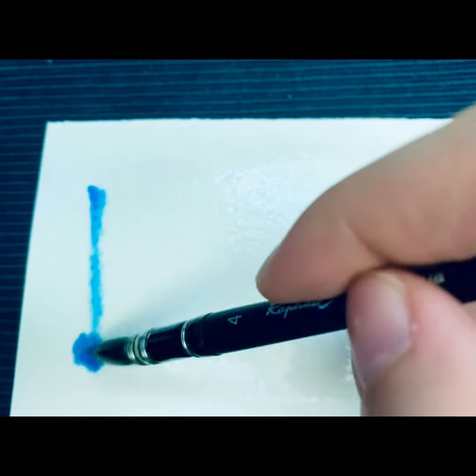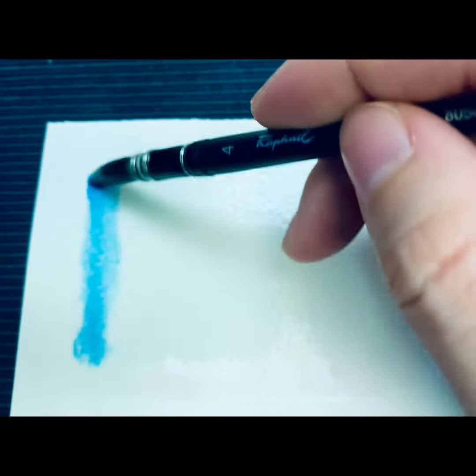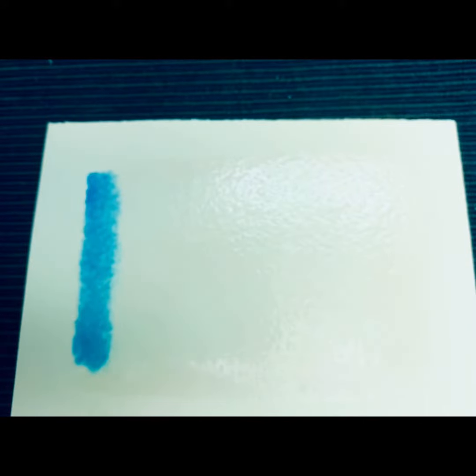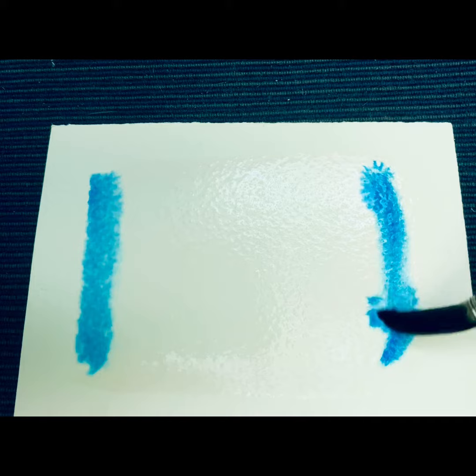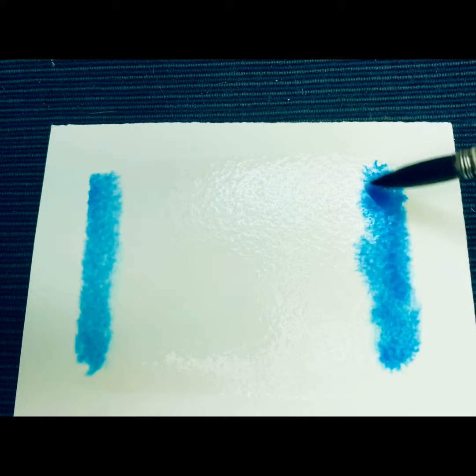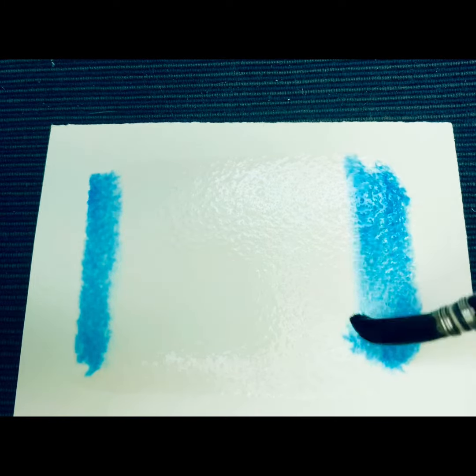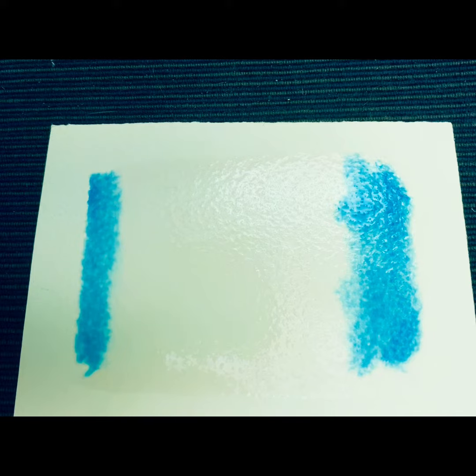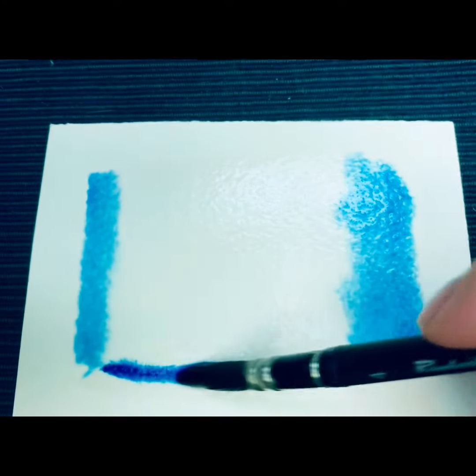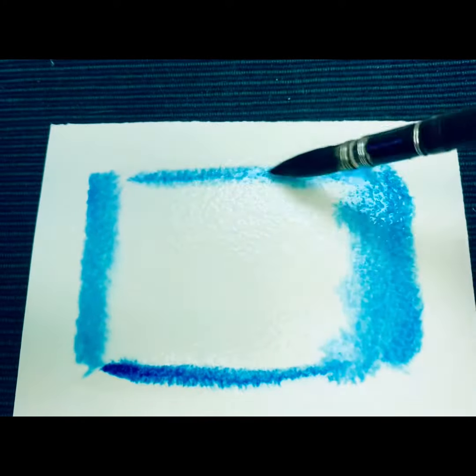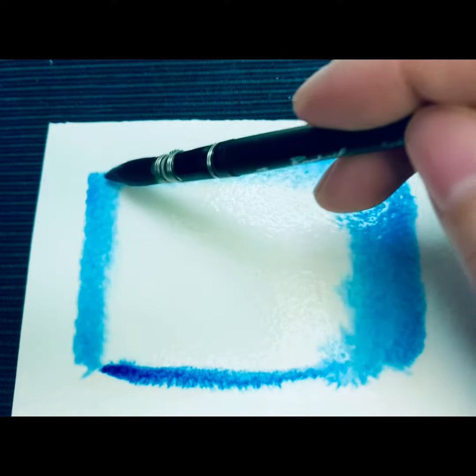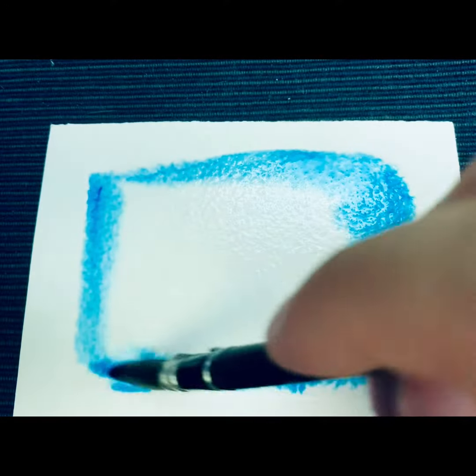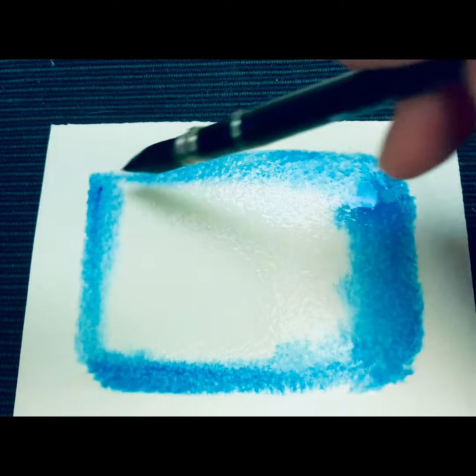I'm using Arches 300 pound paper. After I lay a thin layer of water on top of the paper, now I'm just putting a bit of blue. As you can see, the water and the color are interacting. You can see the color spreading out just like that.